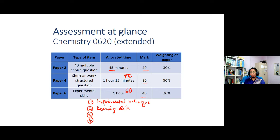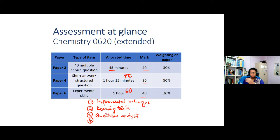Untuk soalan yang ketiga, kebiasaannya adalah kualitatif analisis. Soalan yang ketiga adalah soalan berkaitan kualitatif analisis, di mana seperti yang kita sedia maklum, kualitatif analisis melibatkan series of test and observation, di mana pelajar diminta untuk sama ada memberikan test atau memberikan observation bagi ujian-ujian yang dijalankan. Seterusnya di akhir ujian tersebut, pelajar dapat mengenalpasti identiti bahan yang diberikan.